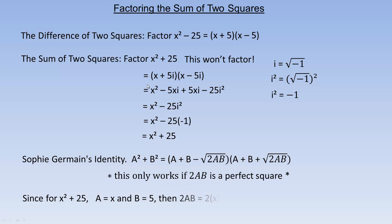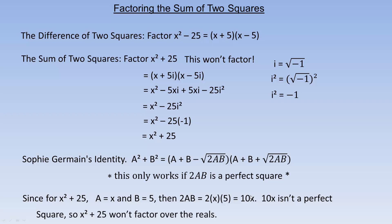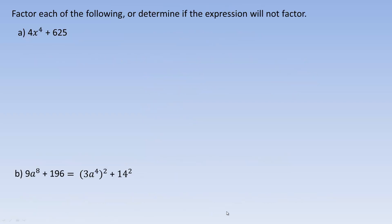For x squared plus 25, the a would be x and the b would be 5. If we look at the 2ab quantity, 2 times x times 5 would be 10x, and 10x isn't a perfect square. So x squared plus 25 won't factor over the real numbers. On the next two pages, we're going to take a look at three examples — a couple that do factor and one that doesn't. First of all: 4x to the fourth plus 625.